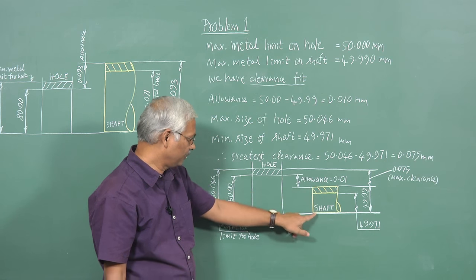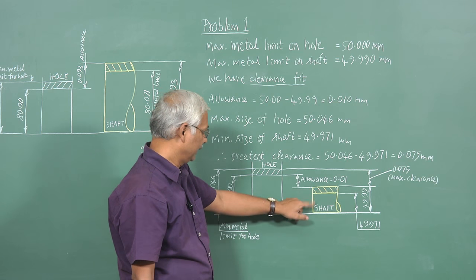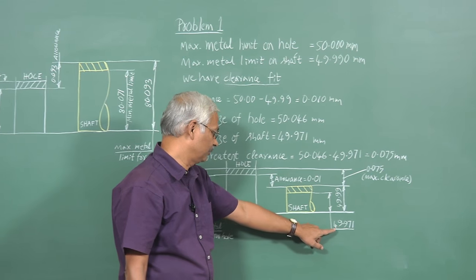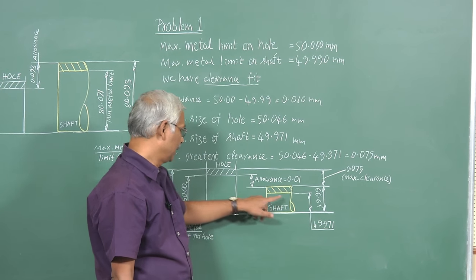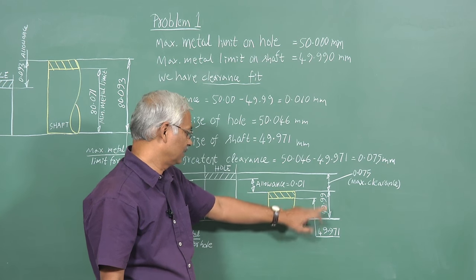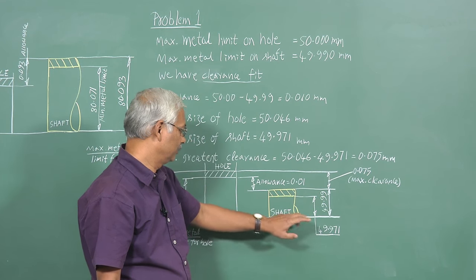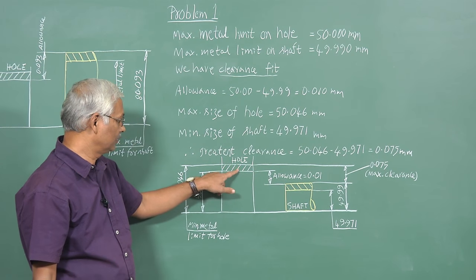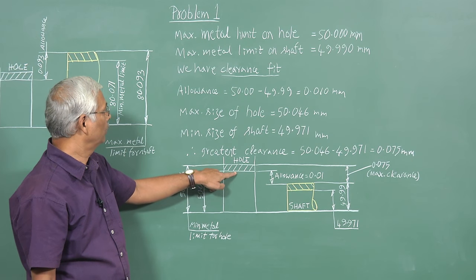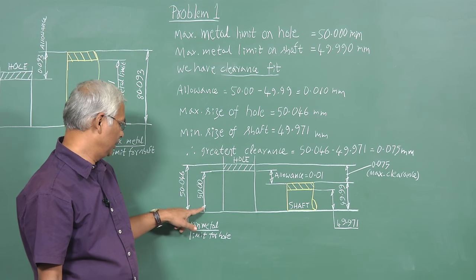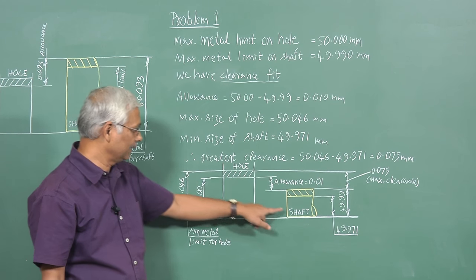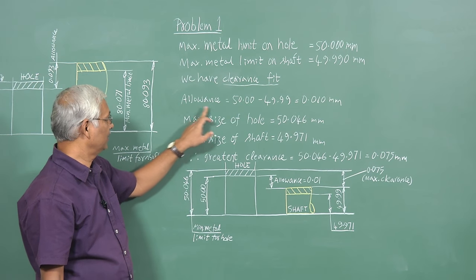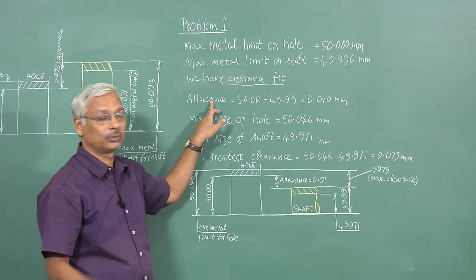For the shaft, the basic size is 50mm. The minimum size of the shaft is 49.971mm. This is the tolerance zone for the shaft, and this is the tolerance zone for the hole. Since the minimum size of the hole is greater than the maximum size of the shaft, we have a clearance fit. The allowance is the difference between the maximum metal limits of the hole and shaft.